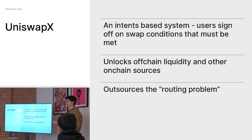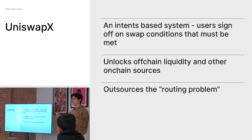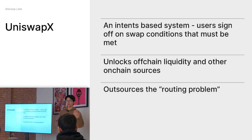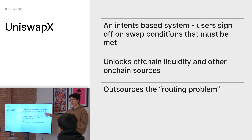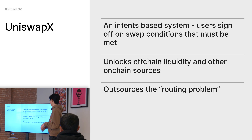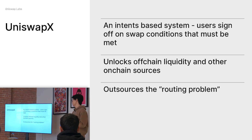Because Uniswap X isn't specifying a specific route or pools, any filler can say they'll take some liquidity from V3, some from V2, but also use their own liquidity or some private liquidity hedged on a CEX somewhere. And essentially for Uniswap, this outsources the routing problem.